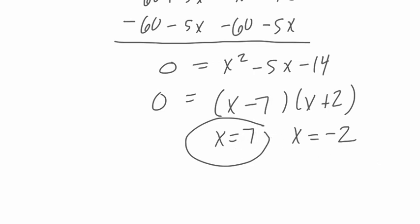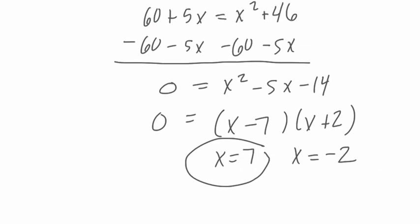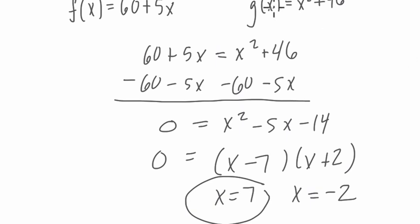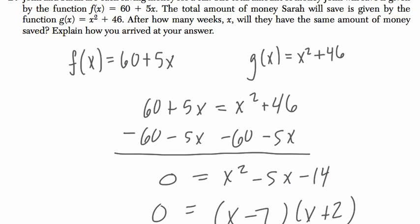And to explain this, you could say you set the two equations equal to each other to find when they are, to solve for x and find when they're equal. And then you only use when x is 7 because you can't have a negative number of weeks. So saying something like that in your explanation will certainly help. Thank you.